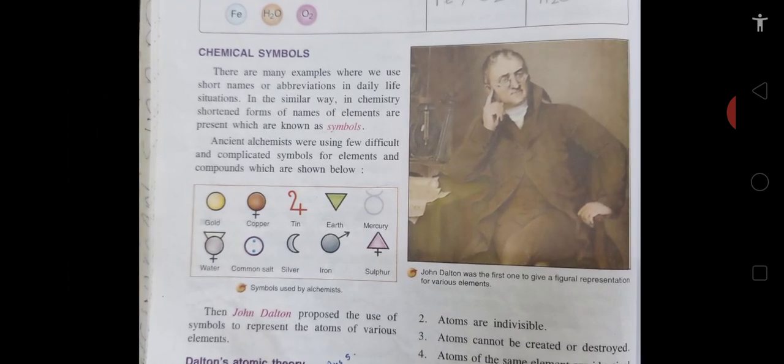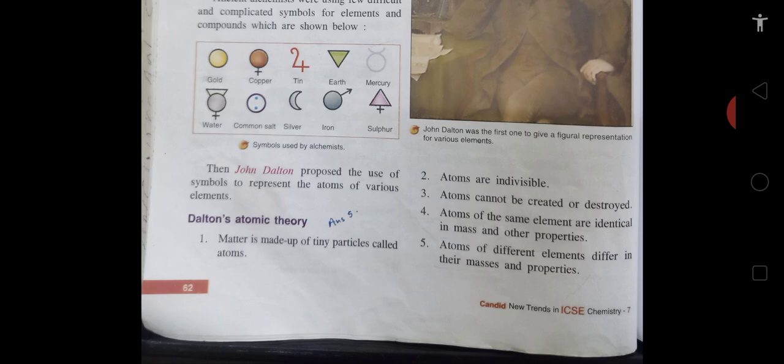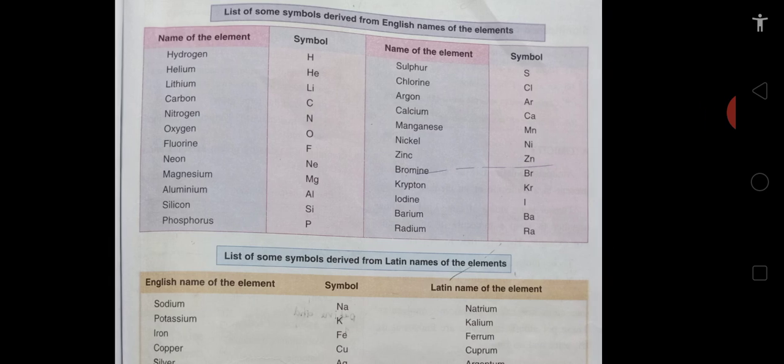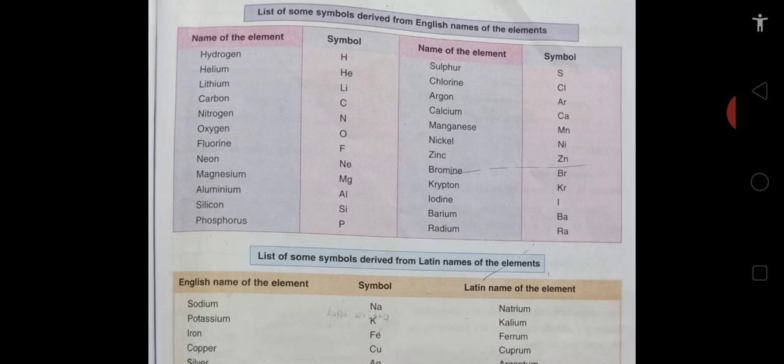There was some theory given by John Dalton. His atomic theory stated: matter is made up of tiny particles called atoms; atoms are indivisible and cannot be divided into further simpler particles; atoms cannot be created nor destroyed; atoms of the same element are identical in mass and other properties; and atoms of different elements differ in their masses and properties. These are the postulates given by John Dalton.